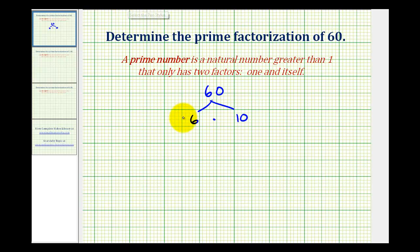Two factors of 6 would be 2 and 3, since 2 times 3 equals 6. Both 2 and 3 are prime because the only factors of 2 are 1 and itself, and the only factors of 3 are 1 and itself. So these are two prime factors of 60.